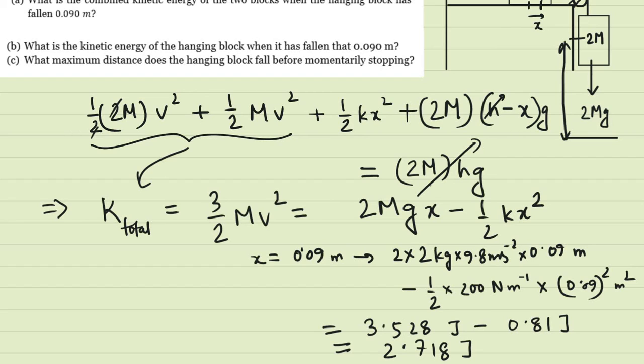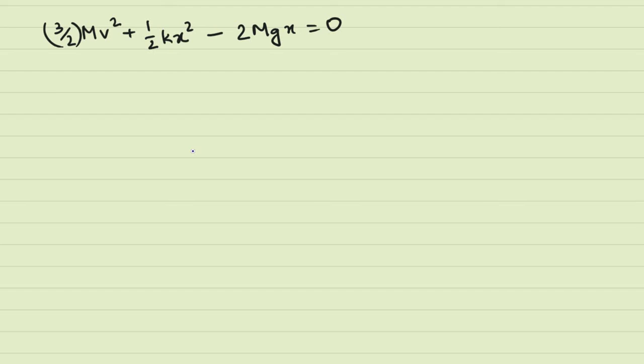The next question is, what is the kinetic energy of the hanging block when it's falling 0.09 m? So we'll have to find out the v right now. So we can find out v by solving this equation right here for x equal to 0.09 m. So let's do that. So this is our simplified equation. So let's just plug in the numbers. So first of all, the v square is on one side. So what do we have? We have 3 by 2 mv squared.